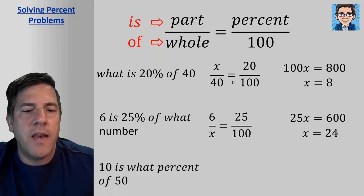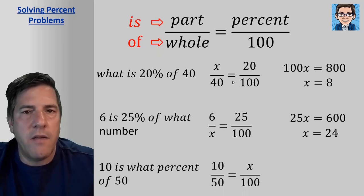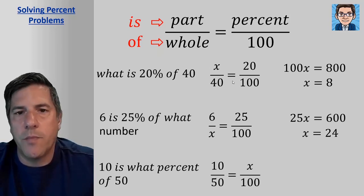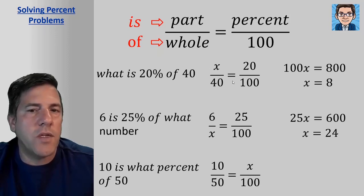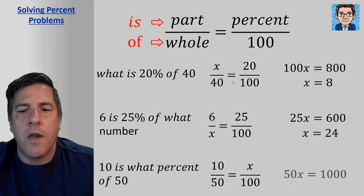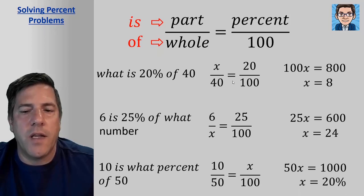And in the last problem, 10 is what percent of 50? So here, we know the part and the whole. The part is 10, the whole is 50. What we don't know is the percent. So here, we put the variable in for the percent, so x over 100. We cross multiply, and here, we get 50x equals 1,000. Divide by 50, and you get the percent equals 20 percent.